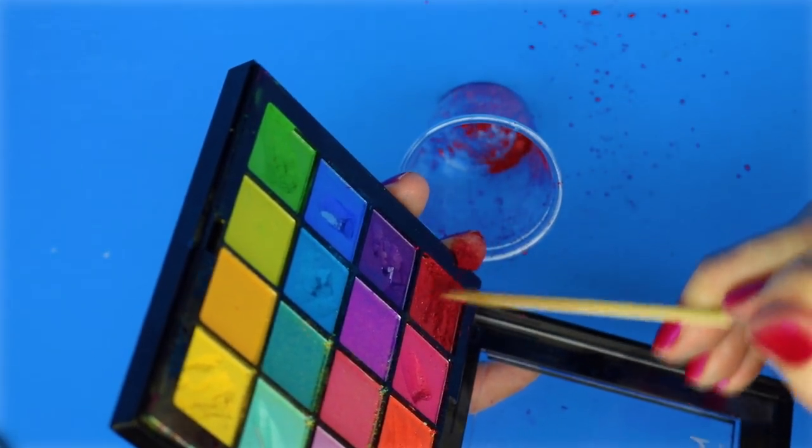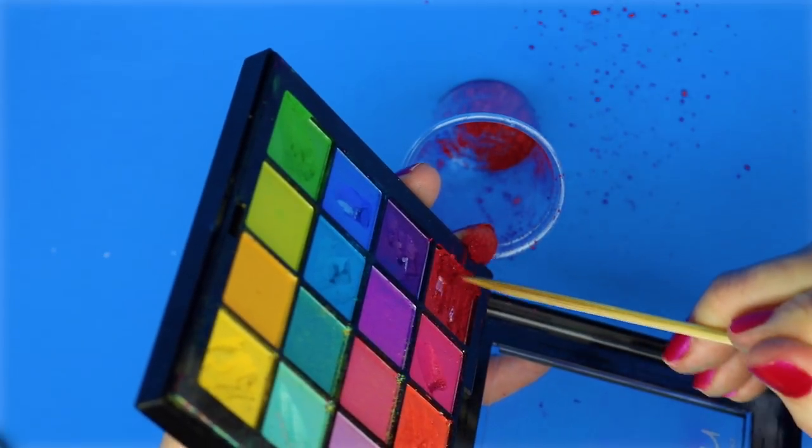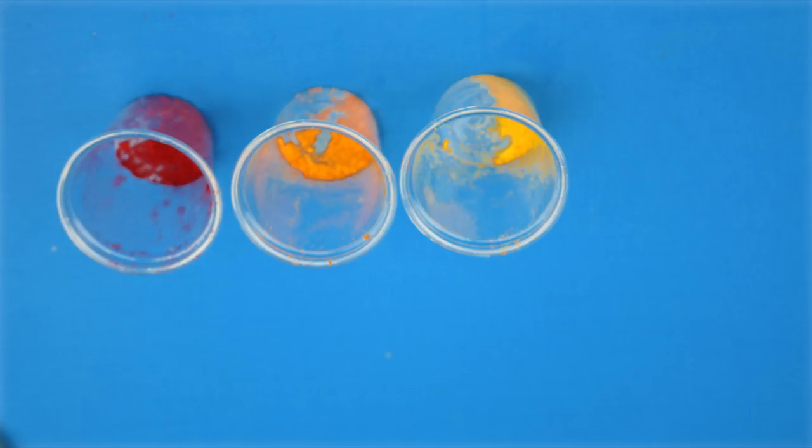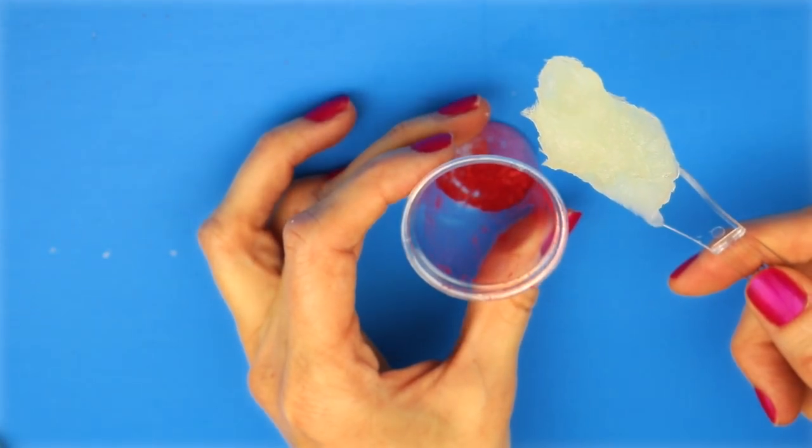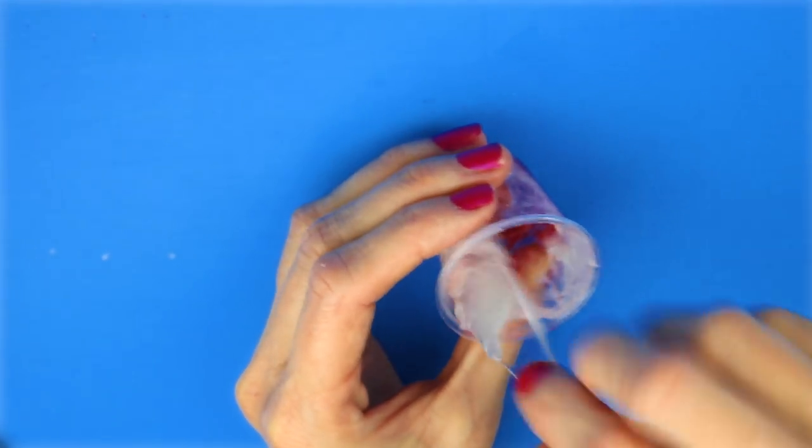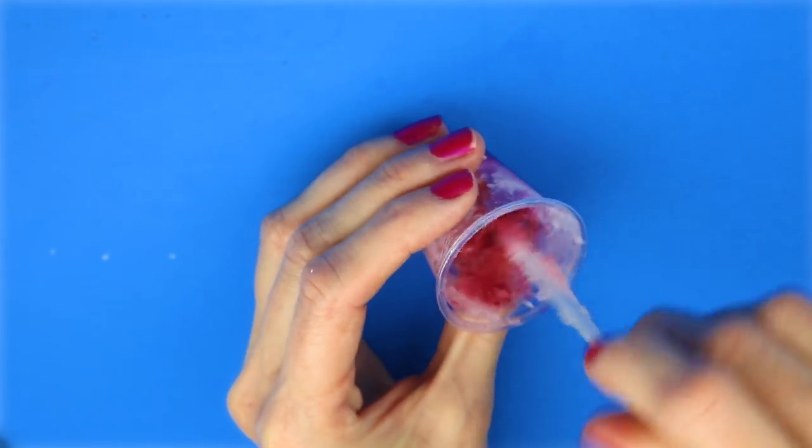What I did was I just started scraping each color of the rainbow into little cups. Next, I took a small amount of Vaseline and mixed that with the eyeshadow. I repeated this same process for each color of the rainbow.